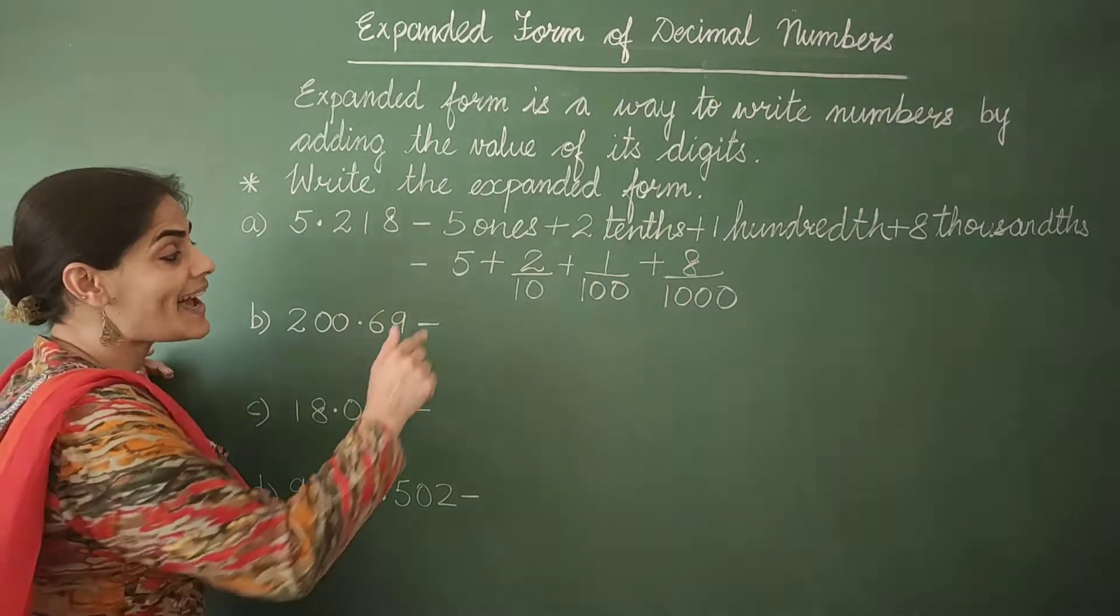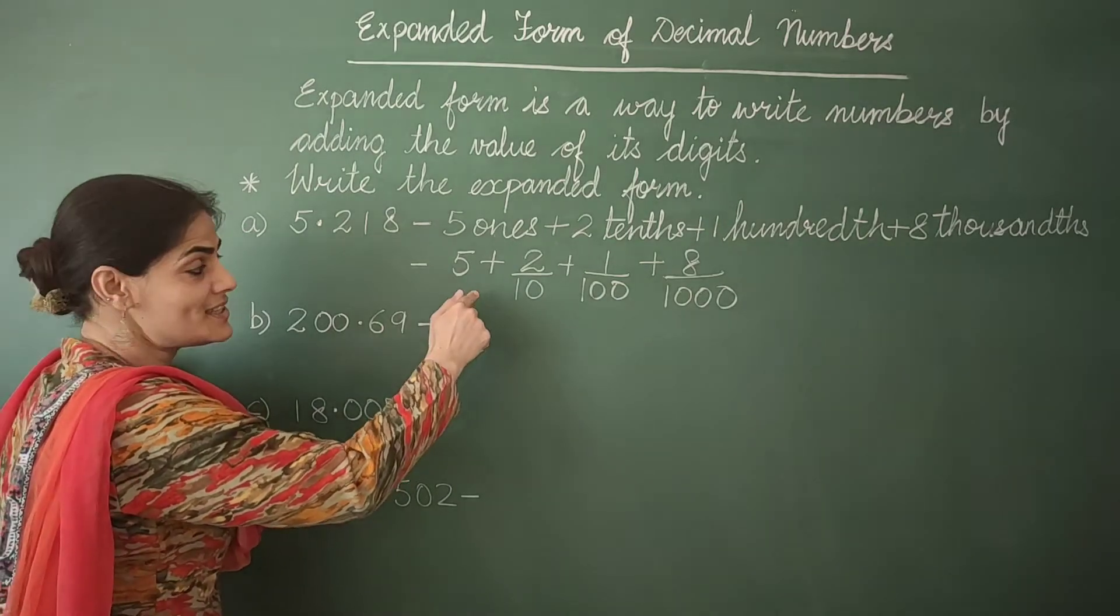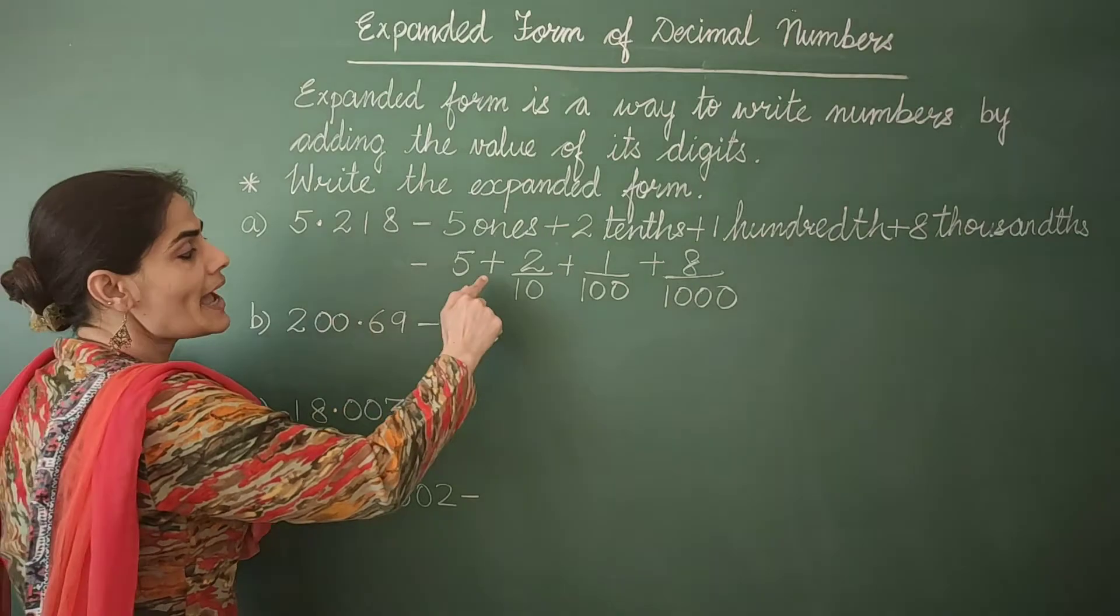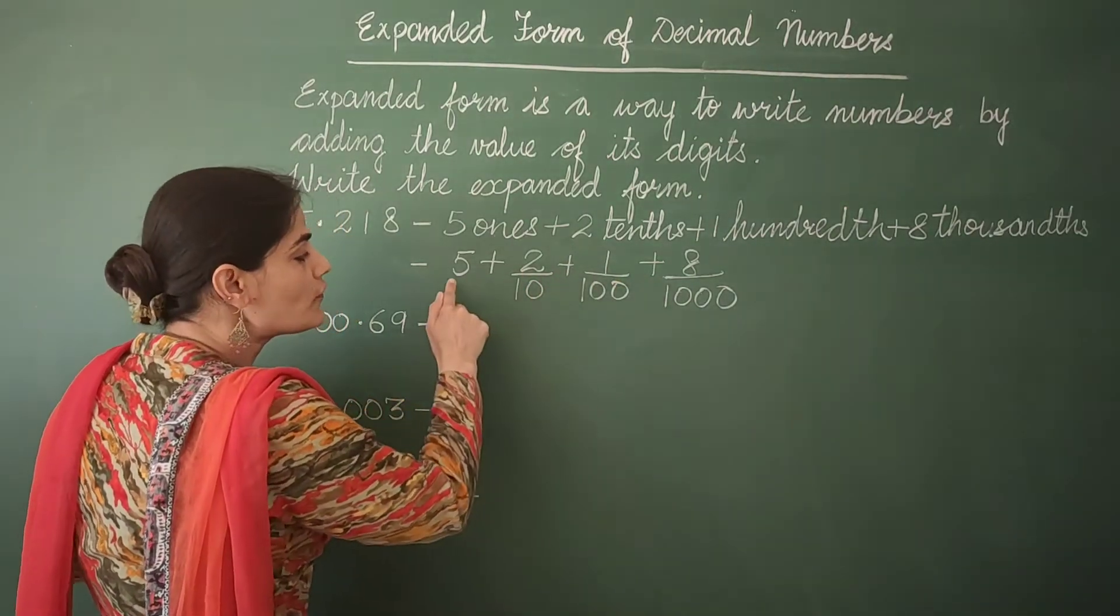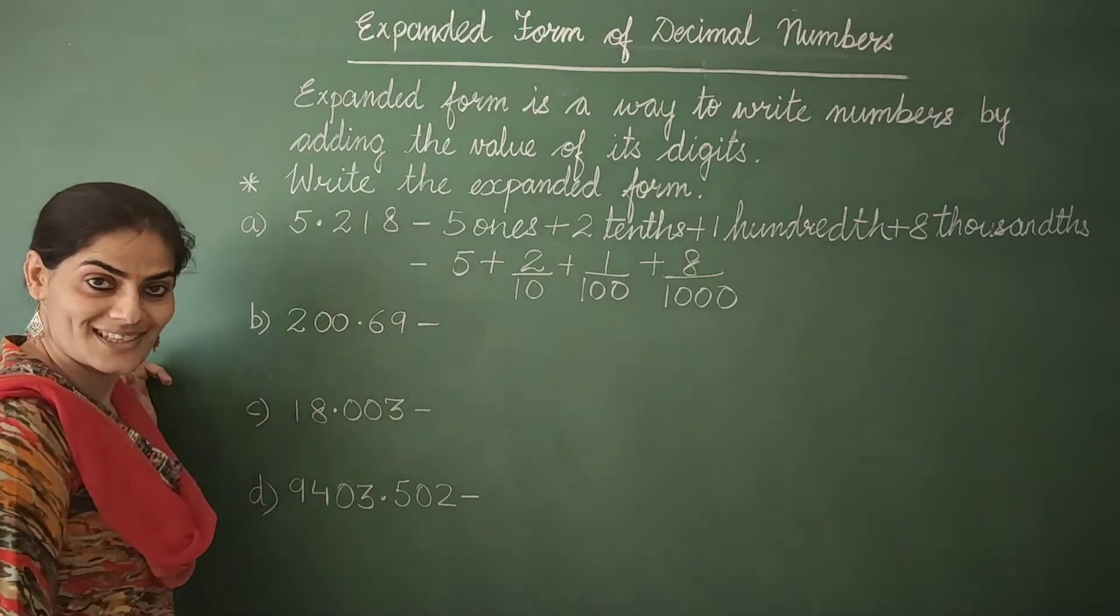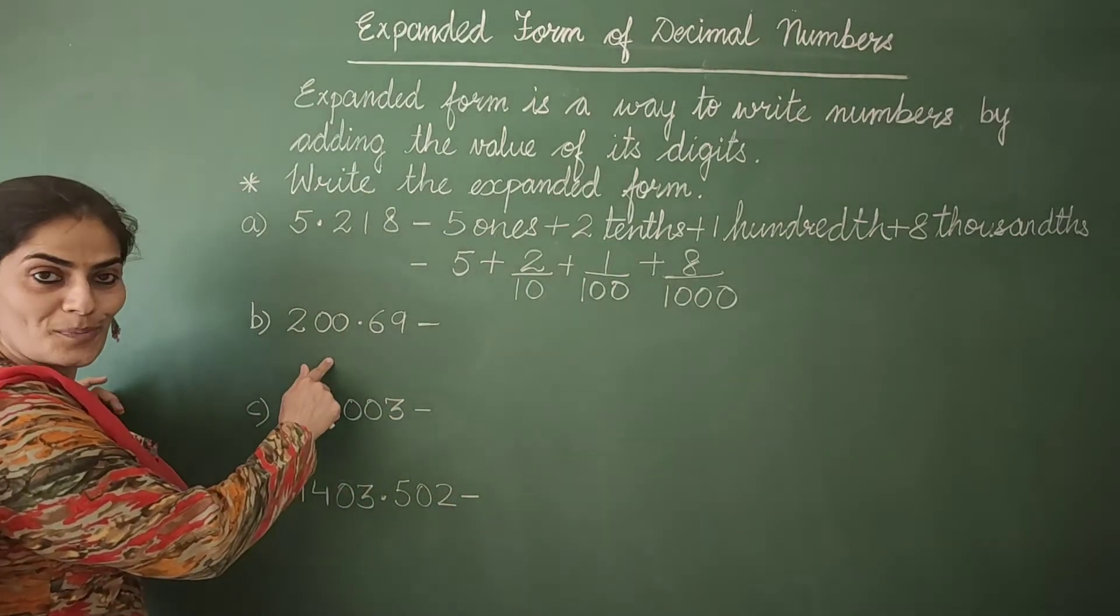Now we know that what is expanded form? See, we have expressed the same decimal number as the sum of place value of all of its digits. Now we move to part B.